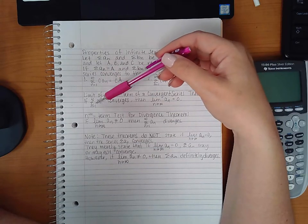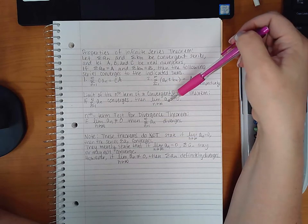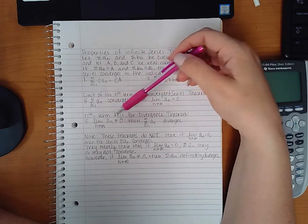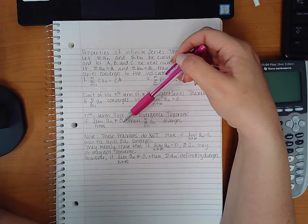If a series converges, then the limit as n goes to infinity of the nth term will be zero. And the nth term test for divergence theorem says that if the limit of a_n does not equal zero, then the series diverges.